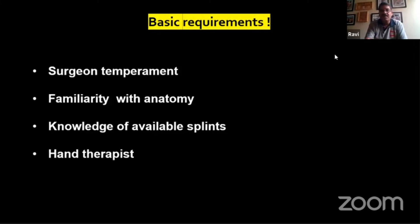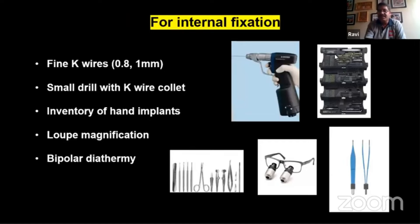The basic requirements for fixing phalangeal fractures — number one is surgeon temperament. It takes a certain kind of temperament and patience to deal with these fractures. You need to be familiar with the anatomy, especially the collateral ligaments, the various tendons, ligaments, and neurovascular bundles. You should have a working knowledge of commonly available splints and ideally the services of a dedicated hand therapist. Your inventory should include fine K-wires of 0.81 mm diameter, a small battery-operated drill with a K-wire collet, and hand implants. For small intra-articular fragments, it's wiser to use loop magnification, and bipolar diathermy is always useful.